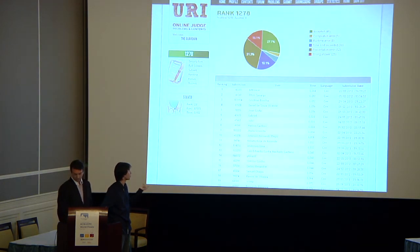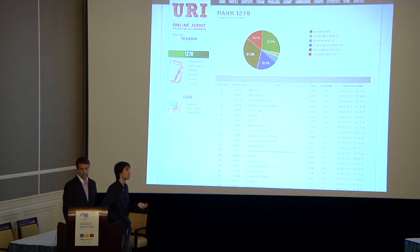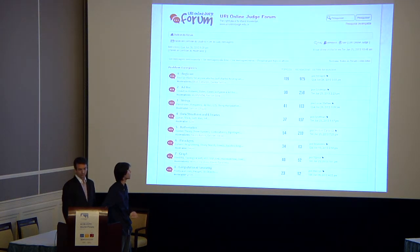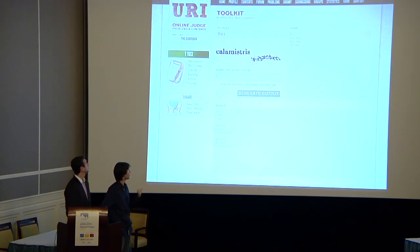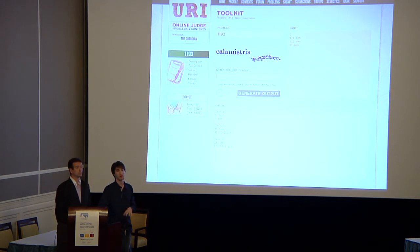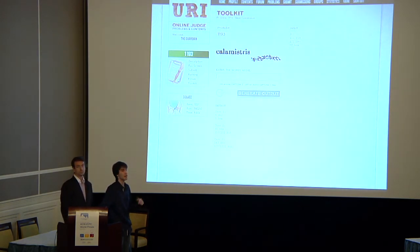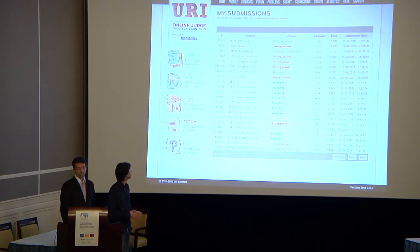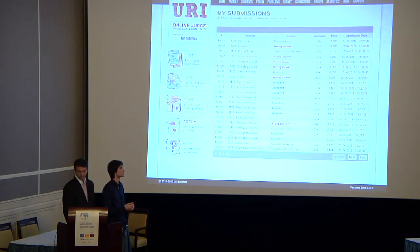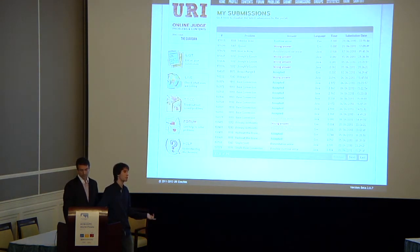Here is the rank page for one specific problem — it shows the fastest submissions with the lowest runtime. Here is our forum, also divided the same way as the web portal. Here is the toolkit, where you can generate the correct output for any given input, helping users test their solution before submitting. Here we have all the submissions a specific user has sent: the problem, the answer, the runtime, and the language, which can be C++ or Java.